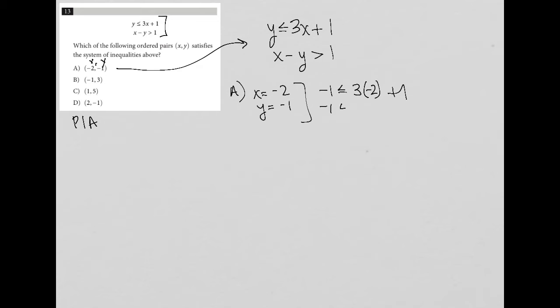I can see if that's true: negative 1 is less than or equal to negative 6 plus 1, which means negative 1 is less than or equal to negative 5. And that is not true. Negative 1 is not less than or equal to negative 5. So choice A is out. There's no need to try the second inequality in this case.